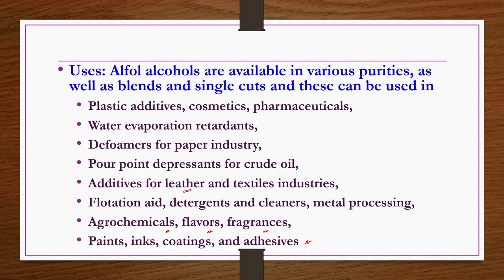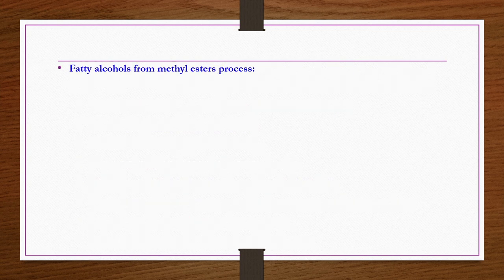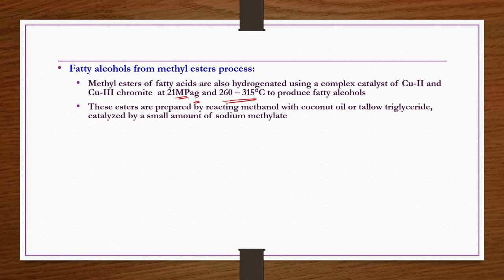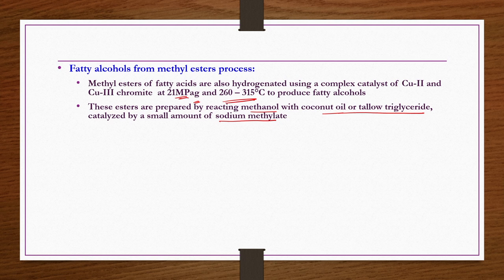Now we look at the process to get fatty alcohols from methyl esters. Here methyl esters of fatty acids are hydrogenated using a complex catalyst of Cu₂ and Cu₃ chromite at 21 MPa gauge and 260–315°C to produce fatty alcohols. These esters are prepared by reacting methanol with coconut oil or tallow triglycerides catalyzed by a small amount of sodium methylate.